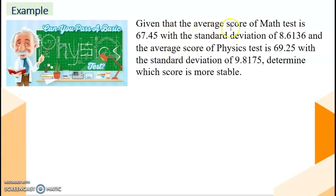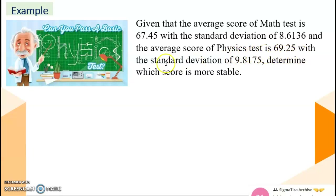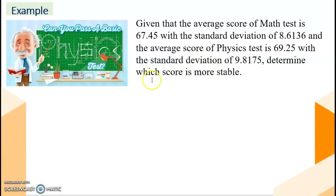We look at one example. Given that the average score of the math test is 67.45 with standard deviation 8.6136, and the average score of the physics test is 69.25 with standard deviation 9.8175. Determine which score is more stable.